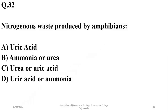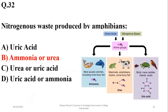Nitrogenous waste produced by amphibians may be ammonia or urea depending on the availability of water. If you only have one option, prefer urea, as most amphibians release urea as the major nitrogenous waste product. Some amphibians also produce ammonia as a waste product.